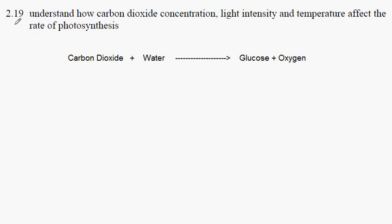IGCSE Biology, syllabus statement 2.19, looking at the factors affecting the rate of photosynthesis.